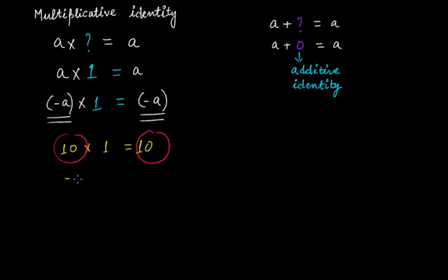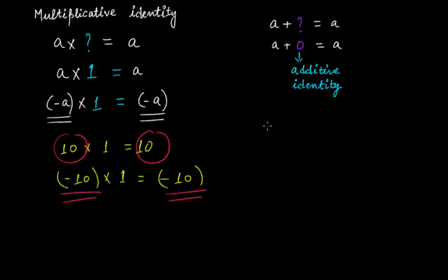Even if it was minus 10 times 1, this will give you minus 10 — same integer. So we can say that for additive identity, zero is the additive identity, and for multiplicative identity, one is the multiplicative identity, because if you multiply 1 with any integer, whether positive or negative, you'll get back that same integer.